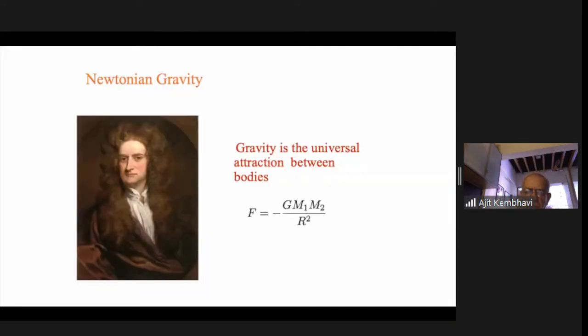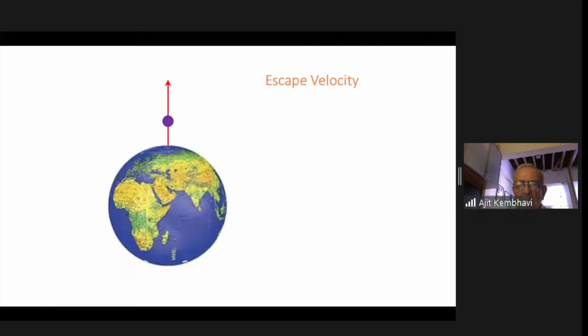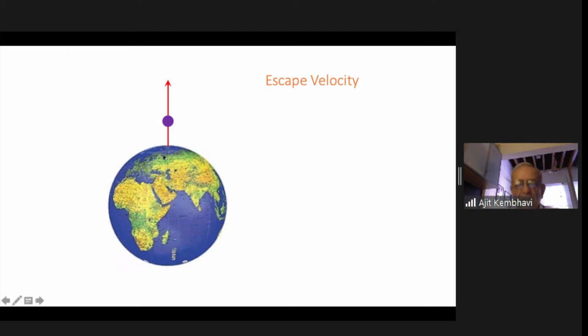Now for the theory of black holes — I'm not really going to go into full detail, but I'll tell you what is essential. First, let us take a quick look at Newtonian black holes. We have F equals minus G M1 M2 by R squared — Newton's law of gravitation. One elementary consequence is the concept of escape velocity. If I throw a ball up into the air, how far it gets depends upon the speed, and you can derive the escape velocity as the square root of 2 G M by R.